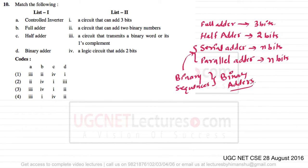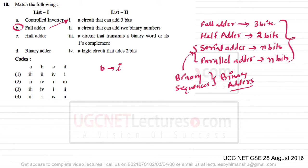These are topics we already covered in digital electronics. For the full adder — option B — the matching option is point I, because it adds three bits of information. For the half adder, the matching option is IV.